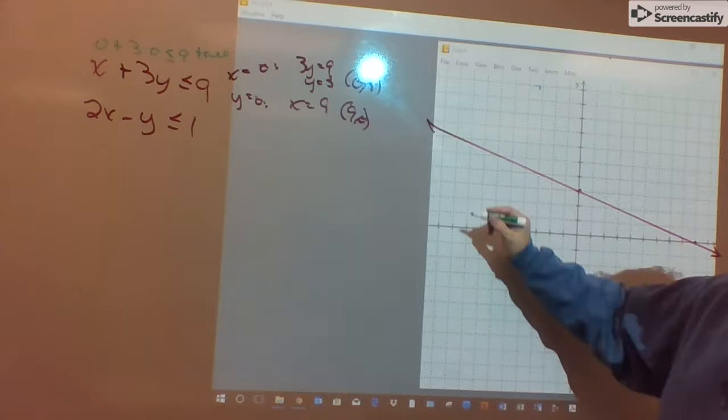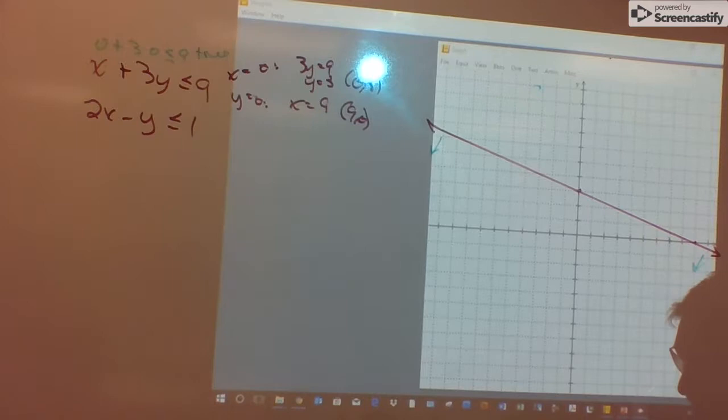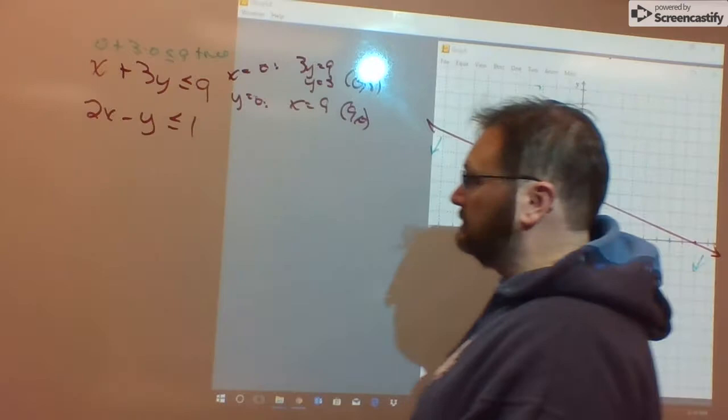I already know from my test point I'm going to shade below and to the left of the line. I'm going to mark that. A little arrow there. A little arrow there showing me shading down. Shading below and to the left. And I'll do the same thing with my other boundary line.